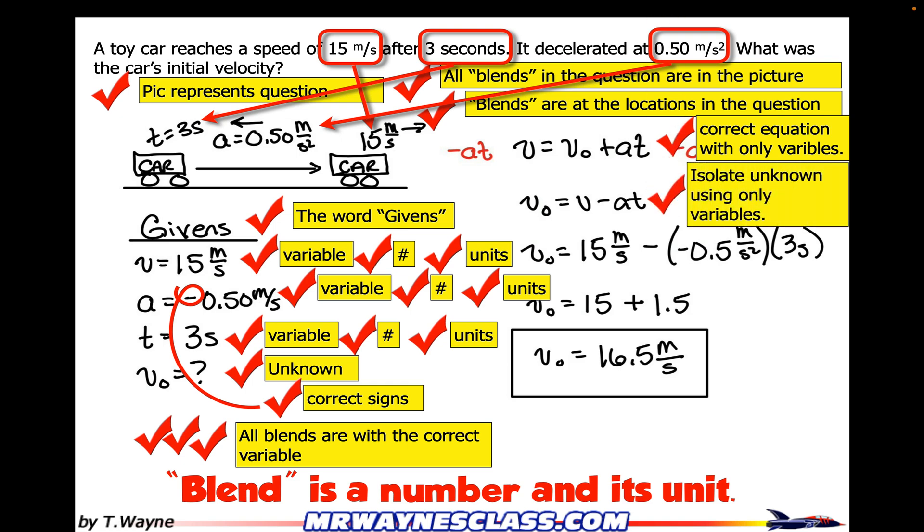So in this case, V0 equals V minus AT. So you can see where I showed that I subtracted AT from both sides. Then I'll put in my blends in the next step. So V0 equals all the blends that are there. That's numbers and units. So correct numbers and I'm looking for the correct units. And then I'm also looking for the correct signs to make sure those match whatever's being told in the story that we're above.